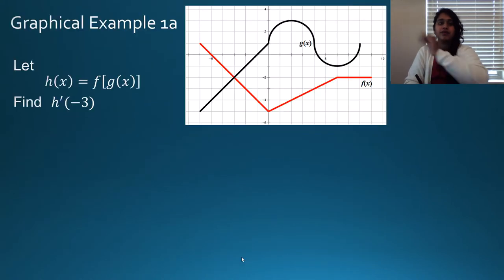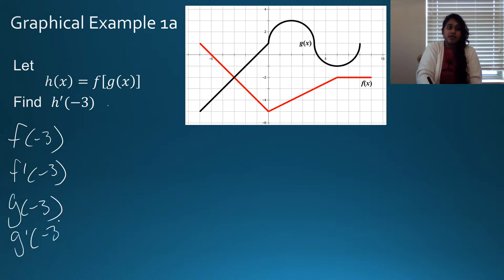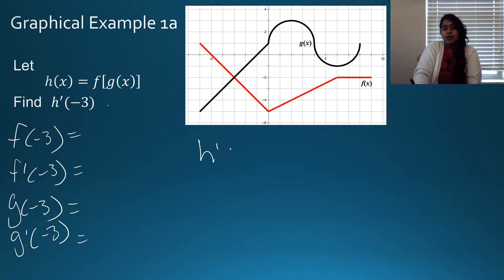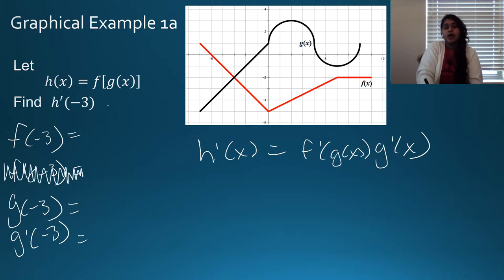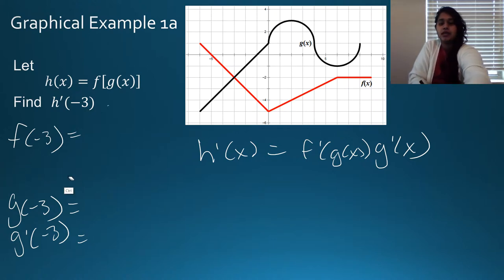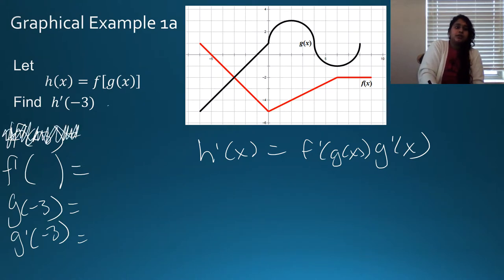Now I've got some graphical ones. In order to work with graphs, we need to figure out F of negative 3, F prime of negative 3, G of negative 3, and G prime of negative 3. The equation is the same: H prime of X equals F prime of G of X times G prime of X. It looks like I'm going to need G of negative 3, then F prime of whatever that value is, and G prime of negative 3. I never actually need F of negative 3.